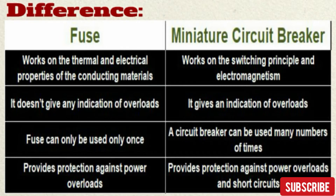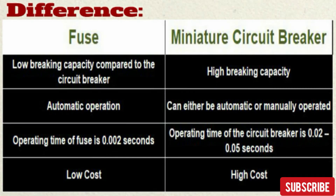Third, a fuse can be used only once, although resettable fuses are now available in the market, whereas an MCB can be used many times. Fourth, a fuse provides protection against power overloads only, but an MCB provides protection against both power overloads and short circuits. Fifth, fuses have a low breaking capacity compared to circuit breakers, but MCBs have a high breaking capacity. The operating time of a fuse is 0.002 seconds, while an MCB operates in 0.02 to 0.05 seconds.